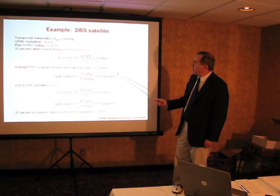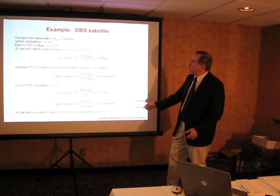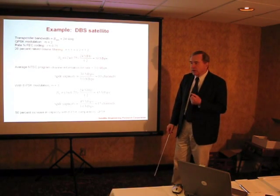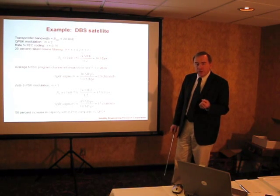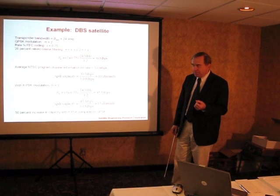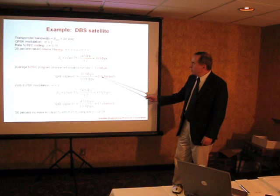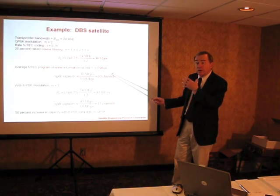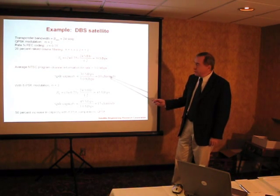Each satellite has a total bandwidth of 500 megahertz, and with 24 megahertz transponders, we can support 16 amplifiers in each of two polarizations, giving us 32 amplifiers altogether on the satellite at a given orbital slot. Therefore, if each amplifier could support 10 channels, that means one satellite — or one combination of satellites at a given orbital slot — could support 320 channels.